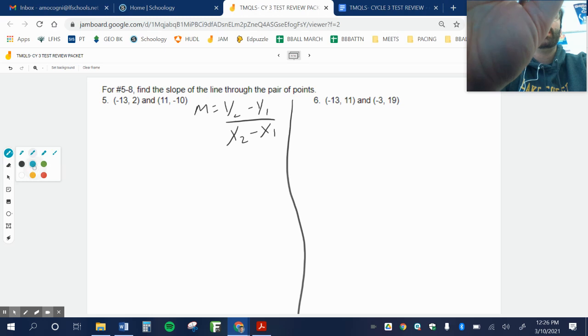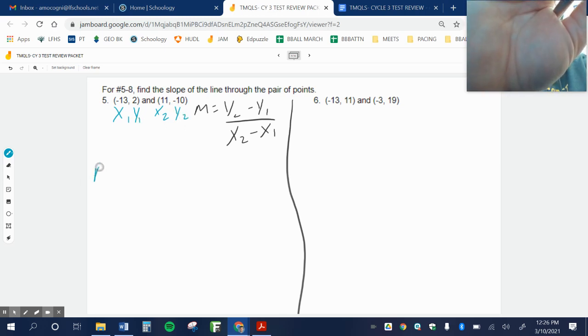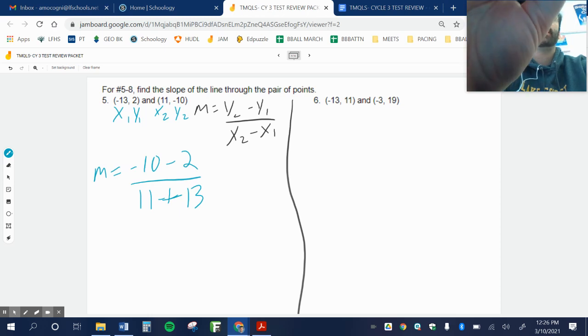So I want to label my points x1, y1, x2, y2. And throw what I know, y2, negative 10, minus y1, which is 2. x2, 11, minus x1, which is negative 13, which becomes one big plus, like that.